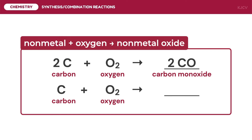For the other reaction, 1 mole of carbon reacts with 1 mole of diatomic oxygen. These reactants have a ratio of 1 to 2, so the product should have 1 carbon atom and 2 oxygen atoms. The product is therefore carbon dioxide, a covalent compound with 1 carbon and 2 oxygen atoms.